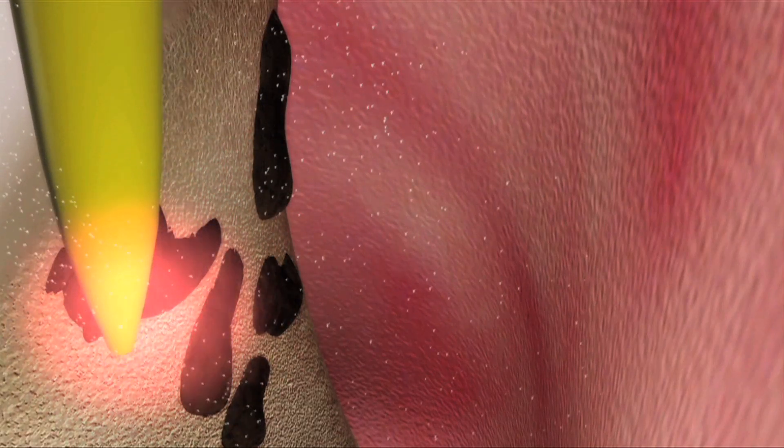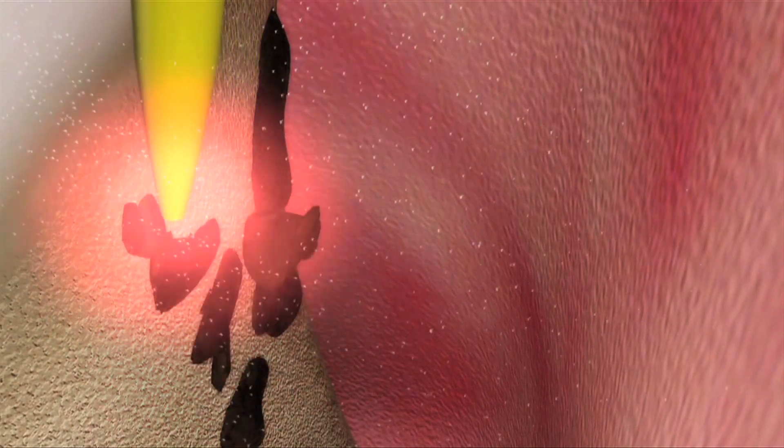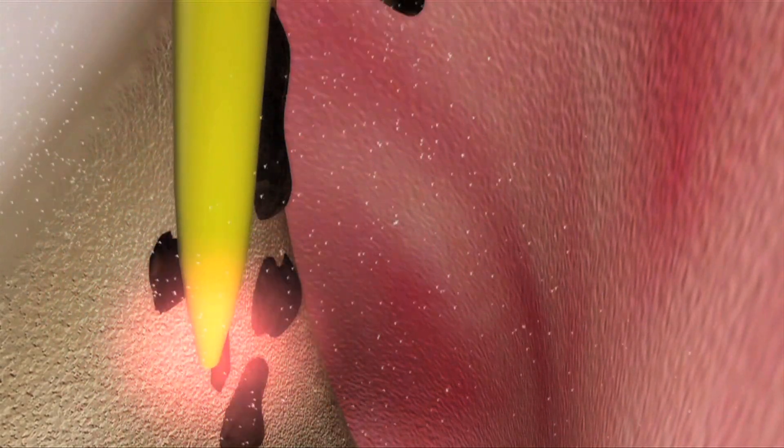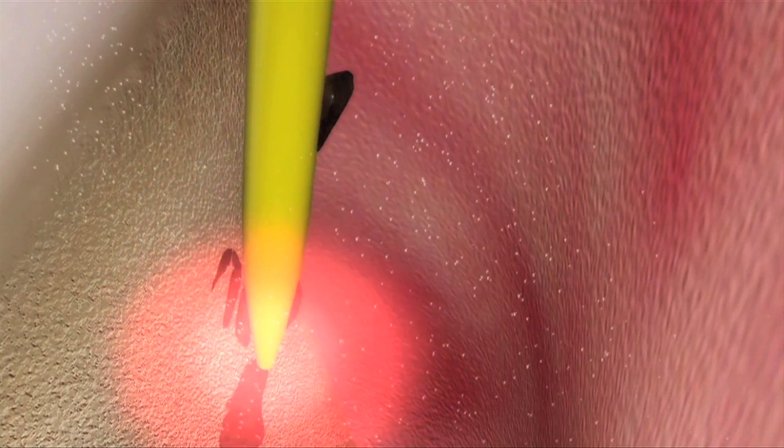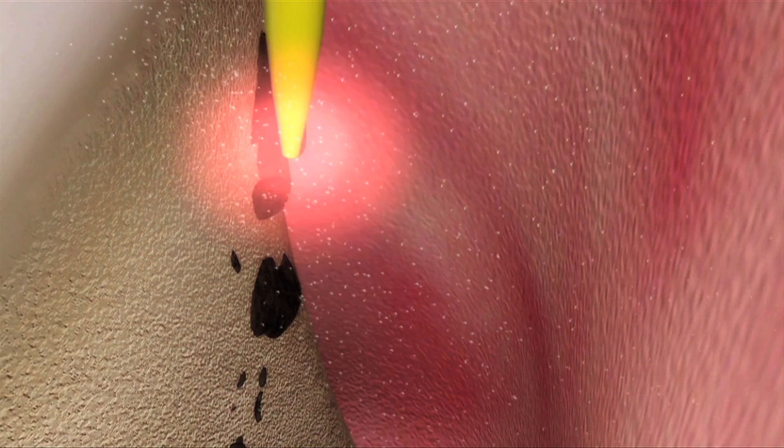With the laser firing, the tip is lowered along the root surface towards the bottom of the pocket until you feel a piece of calculus on the root surface. The Erbium YAG laser energy allows you to just tap it off.